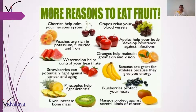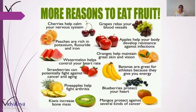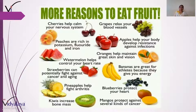Kiwis increase bone mass. Grapes relax your blood vessels. Apples help your body develop resistance against infection — agar aapko jaldi jaldi infection hota hai toh apples khaane chahiye. Oranges help maintain great skin and vision — achchi si skin aur eyesight ke liye santre khaiye. Bananas are great for athletes because they give you energy — agar aap khiladi hain toh kele khaiye, isse bhoat saari energy milti hai. Blueberries protect your heart. Mangoes protect against several kinds of cancer. Toh do fayde ho gaye — mazedaar mithe phal bhi kha rahe ho aur itni saari diseases se bhi bache raho.